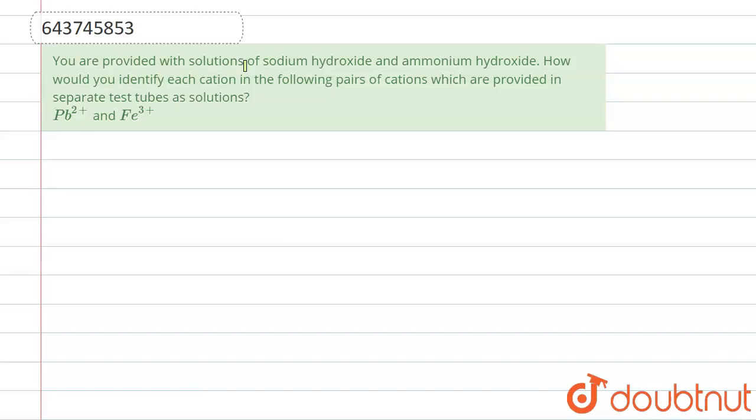You are provided with solutions of sodium hydroxide and ammonium hydroxide. How will you identify each cation in the following pairs of cations which are provided in separate test tubes as solutions?